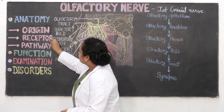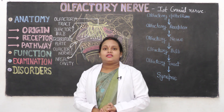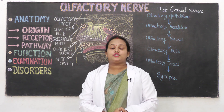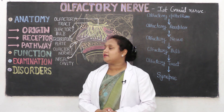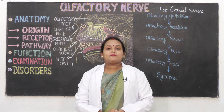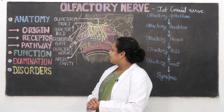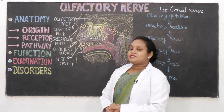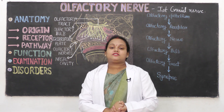Next, we will talk about the receptor. This receptor is something special because it is bipolar neurons. Bipolar neurons means this neuron which has two poles. So these receptors are the bipolar neurons.